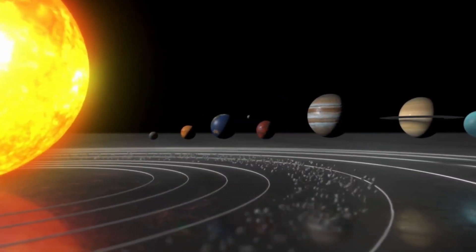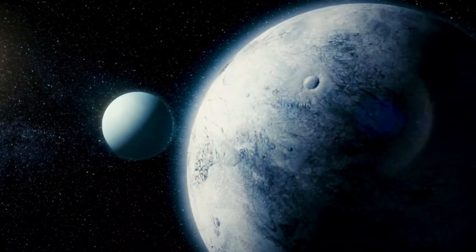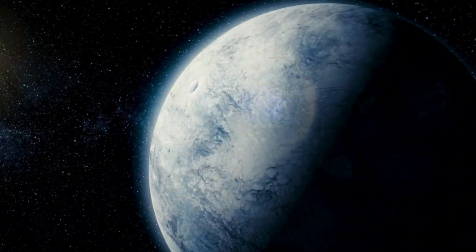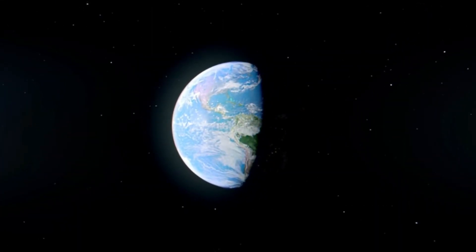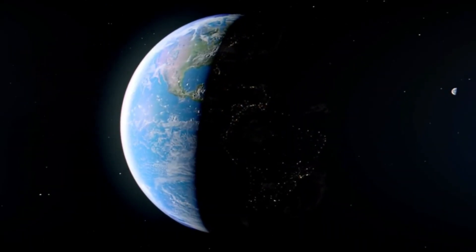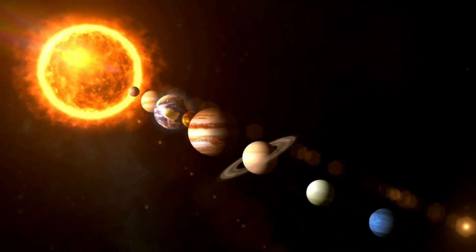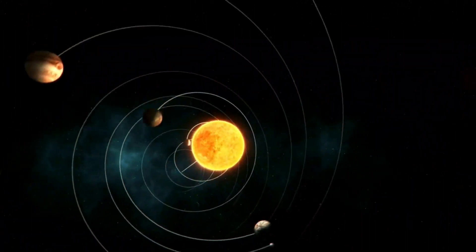In our current understanding of the solar system, the Sun is at the center, and planets orbit it. Each planet follows an elliptical path around the Sun, governed by the laws of gravity. If all the planets orbited Earth, this concept would be fundamentally altered.